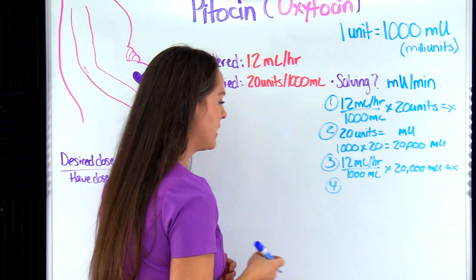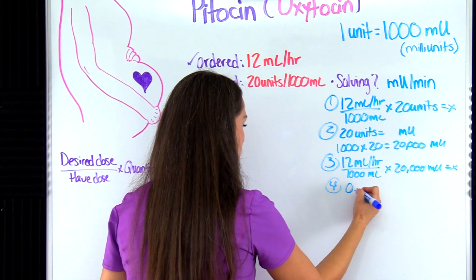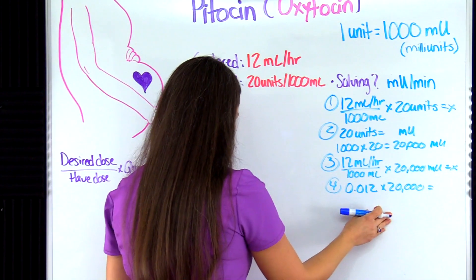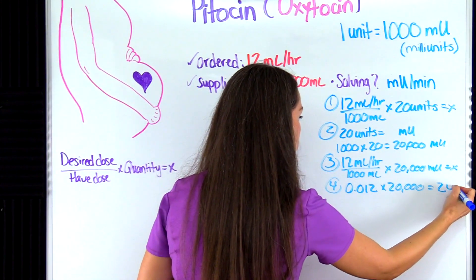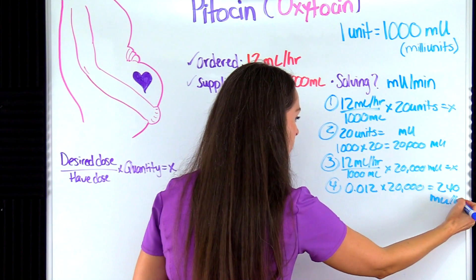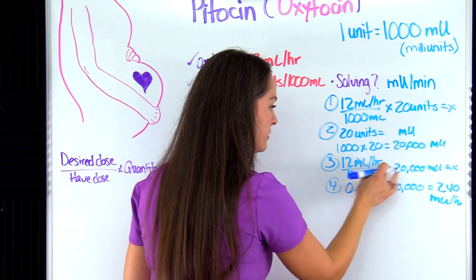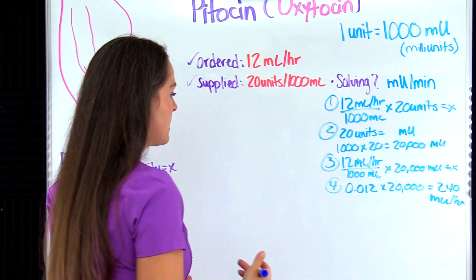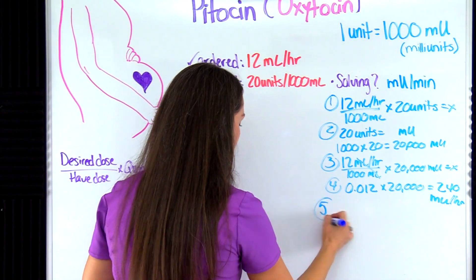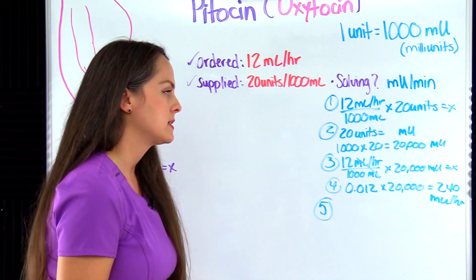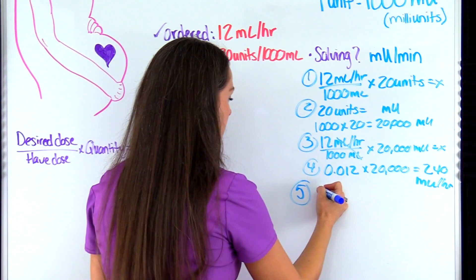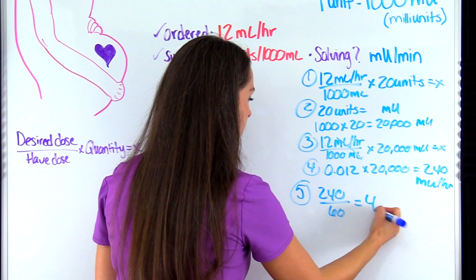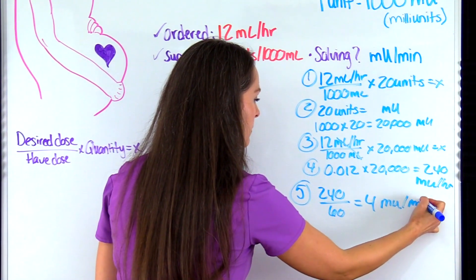Let's go ahead and solve: 12 divided by 1000 gives 0.012. Multiplying that by 20,000 gives 240 milliunits per hour. The milliliters cancel out, leaving milliunits per hour. But the problem asks for milliunits per minute, so we divide by 60: 240 divided by 60 equals 4. So four milliunits per minute is our answer.